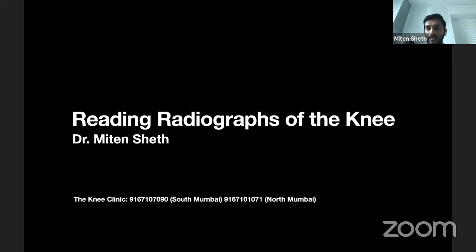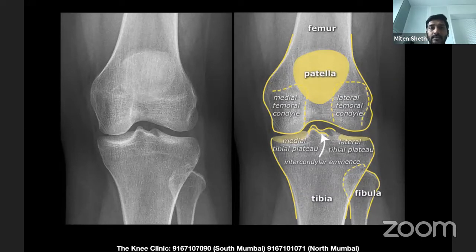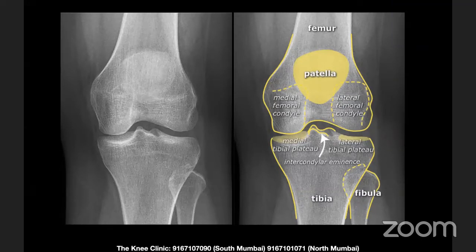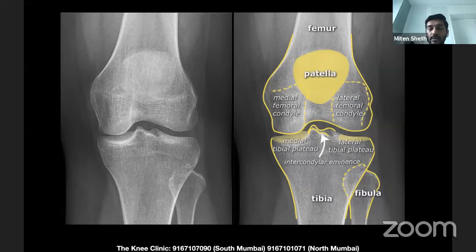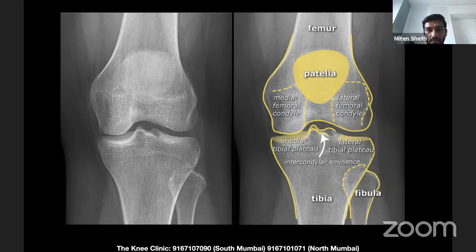Today we're talking about reading radiographs of the knee. What do we want to see in these X-rays? A simple anterior-posterior view, a lateral X-ray, and a skyline view of the patella are the three common X-rays everyone talks about. On the AP view, we're looking at four bones: the patella, femur, tibia, and fibula.